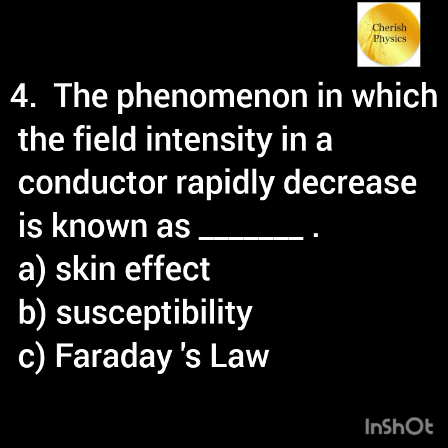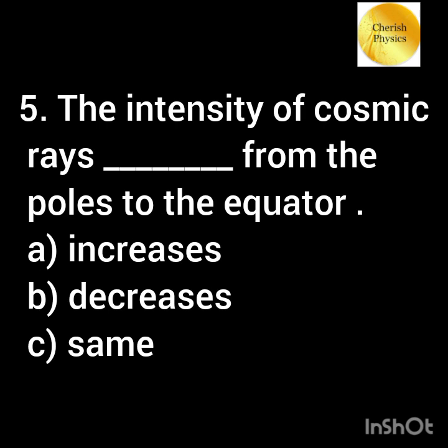The phenomenon in which the field intensity in a conductor rapidly decreases is known as dash. Option A: skin effect. Option B: susceptibility. Option C: Faraday's law.